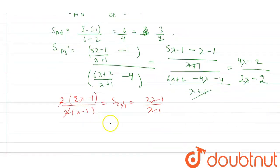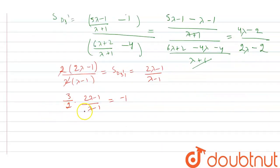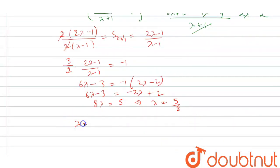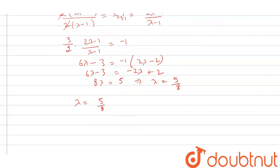Now, the multiplication of the two slopes equals minus 1: slope of AB (3/2) into slope of DD' (2λ − 1)/(λ − 1) equals minus 1. Expanding: 6λ − 3 equals minus 2λ + 2, so 8λ equals 5, giving lambda equals 5 by 8. Therefore, the ratio of the line is 5 to 8.